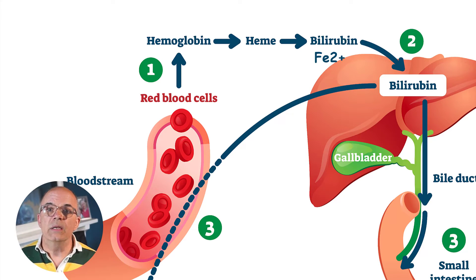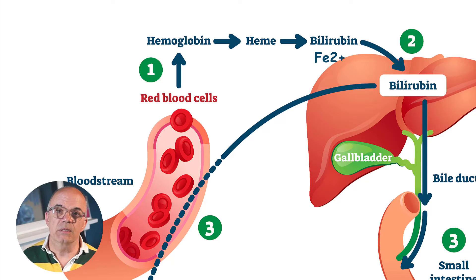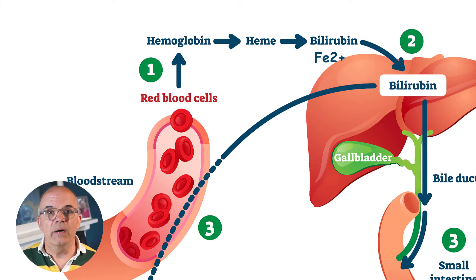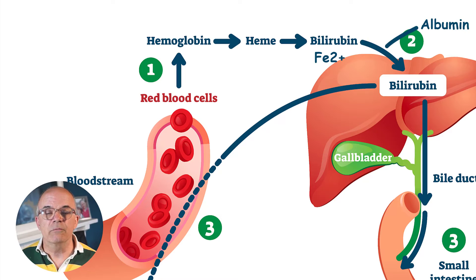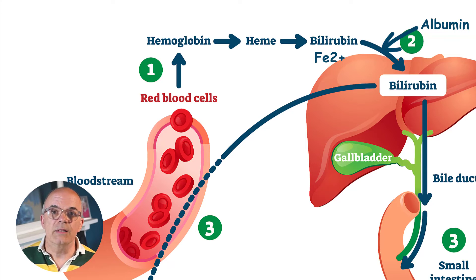Unconjugated bilirubin needs to be removed from the body as it's toxic. Because the unconjugated bilirubin is lipid soluble, it has to bind with albumin in order for it to be carried around the bloodstream. The albumin carries the unconjugated bilirubin to the liver.